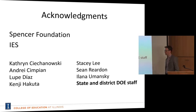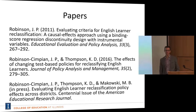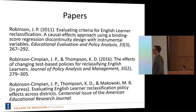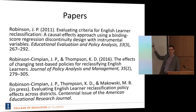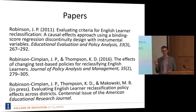I want to give a quick overview of the papers I'm going to talk about today. The first paper was published in EPA back in 2011 and came out of my dissertation work here — so there is a light at the end of the tunnel. That paper laid the groundwork for how we might think about the effects of reclassification, and includes both a theoretical framework and an empirical analysis using data from one large urban school district in California.